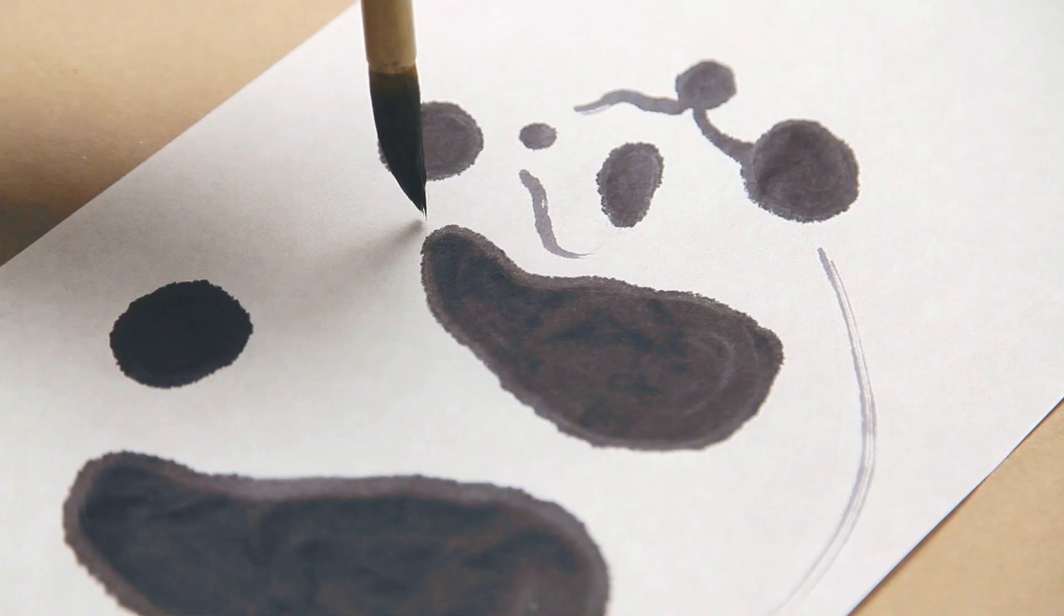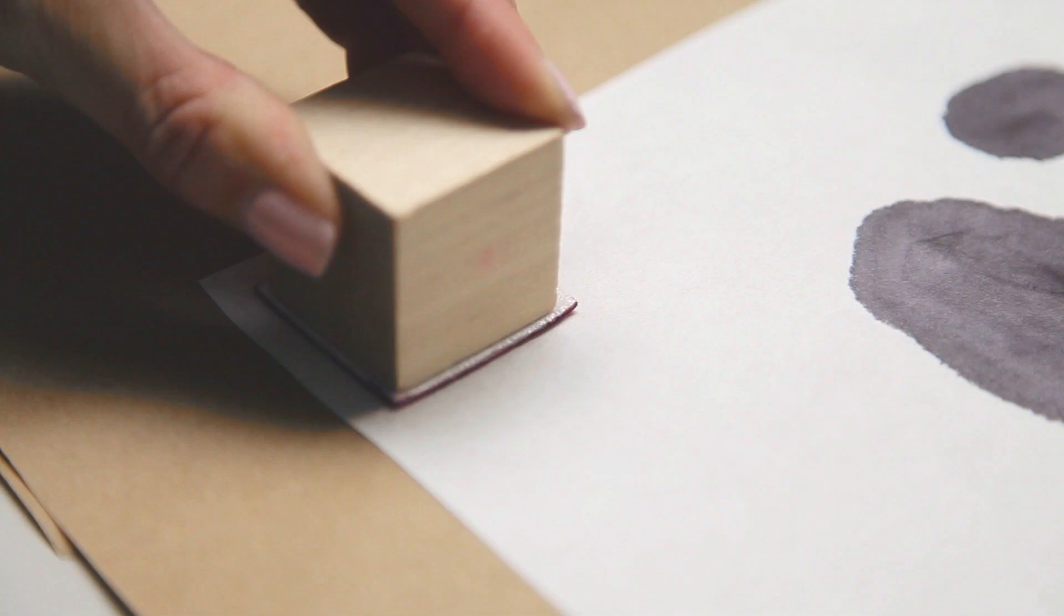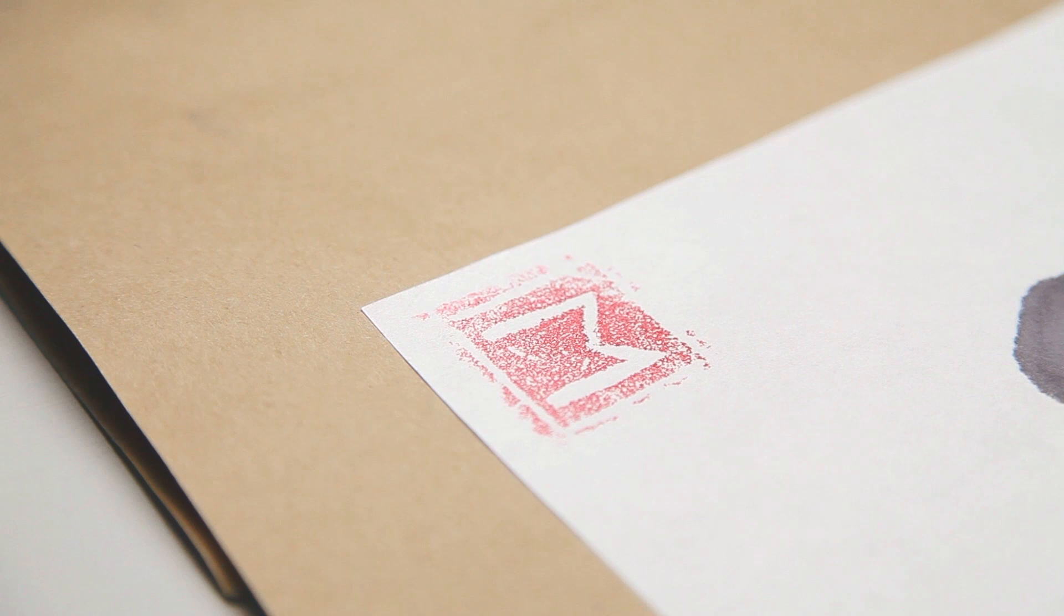Of course, your panda needs to eat. Let's make its bamboo. Use thick lines to create your bamboo stock, and finish it off with thinner lines for the leaves.